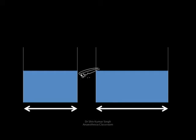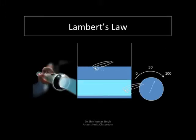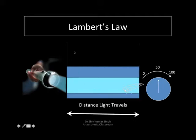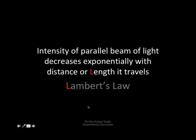Now let's take two beakers of different sizes but containing a substance of the same concentration. When we shine a light through the first beaker, a certain amount is absorbed and the intensity recorded is reduced. But when we shine the light through the larger beaker, the amount of light absorbed is reduced further and the intensity recorded is much lower than the first one, because the light has travelled through a longer distance. Lambert's law states that the intensity of a parallel beam of light decreases exponentially with the distance or length it travels through.